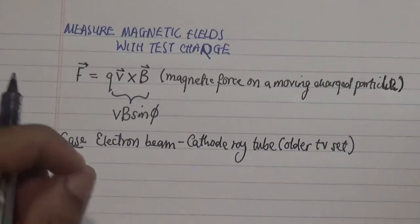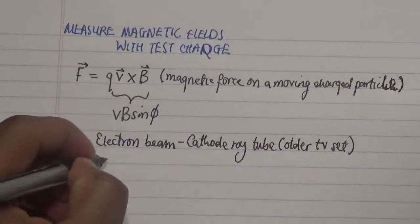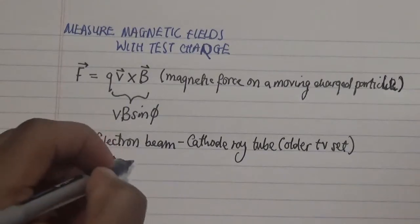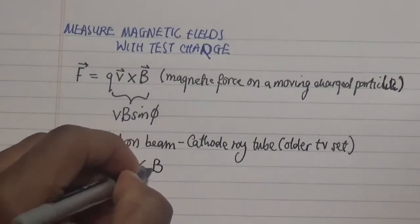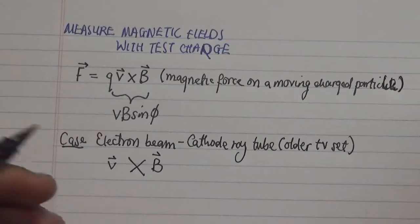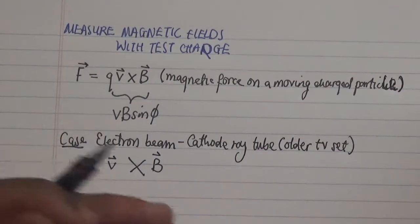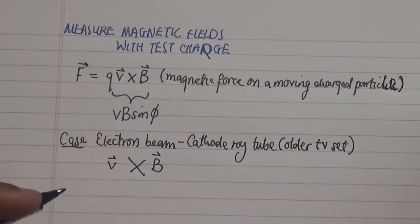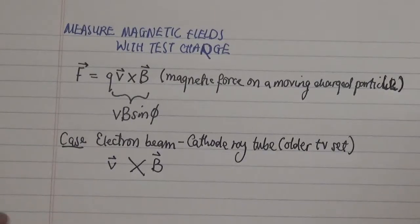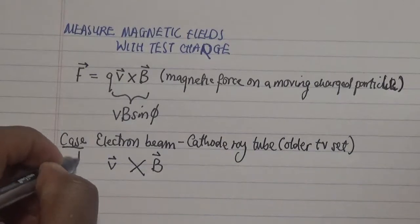These known velocities of our electrons allow us to determine what happens in different scenarios. If there is no magnetic field present, there is no force to deflect the beam, so in that case the electron simply strikes the screen of our TV directly.